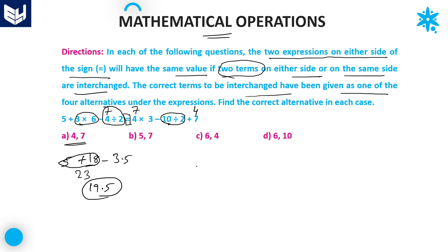Now for the right hand side: first priority is division — 10 divided by 2 equals 5. After that, multiplication: 7 into 2 equals 14. Wait — this is 7, not 4. 7 into 2 equals 14, and then 21 minus 5 plus 4. Both sides are not equal, so you can eliminate option A directly.